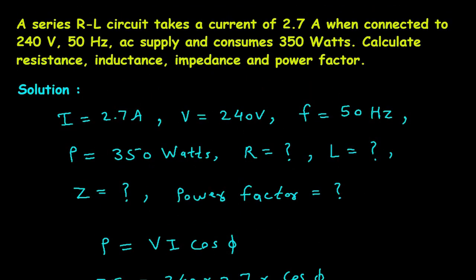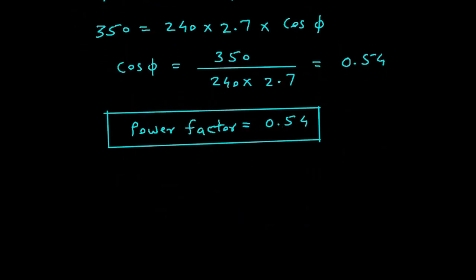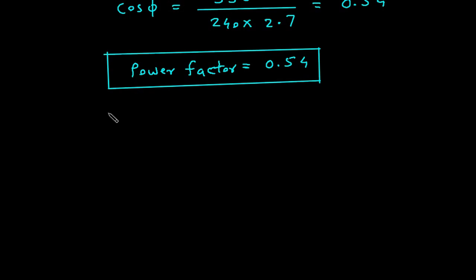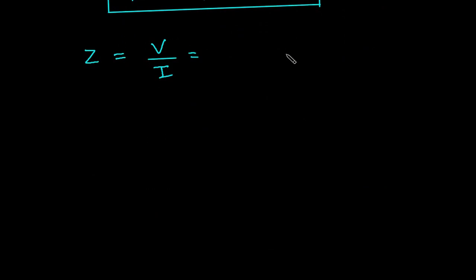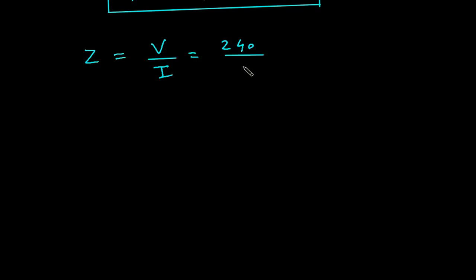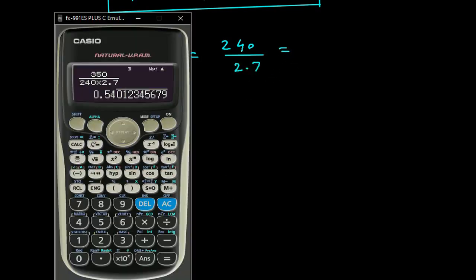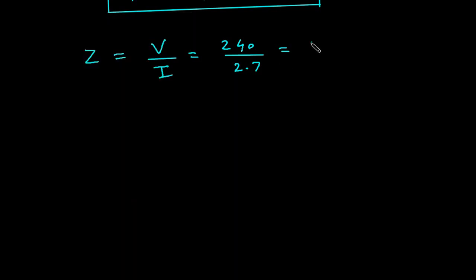From here, we can also find the value of impedance. Z = V / I = 240 / 2.7 = 88.8 Ohm. Therefore, Z = 88.8 Ω.